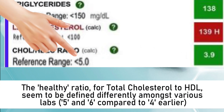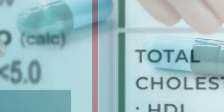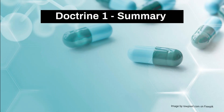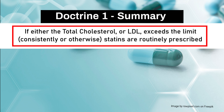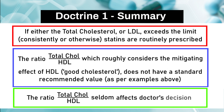The healthy ratio for total cholesterol to HDL seems to be defined differently amongst various laboratories. In summary, under Doctrine 1, if either the total cholesterol or LDL exceeds the limit, statins are prescribed. The ratio of total cholesterol to HDL does not have a standard recommended value and seldom affects a doctor's decision.